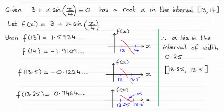Hi there. Now here we have a question on finding a root by interval bisection. We were given this equation, 3 plus x times sine of x over 4 equaling 0, told that it had a root alpha in this interval 13 to 14,